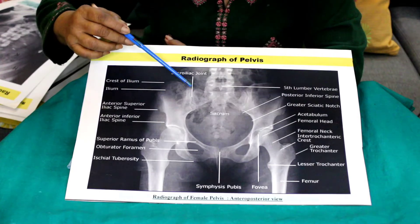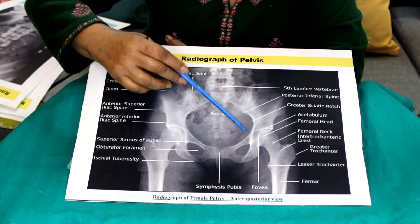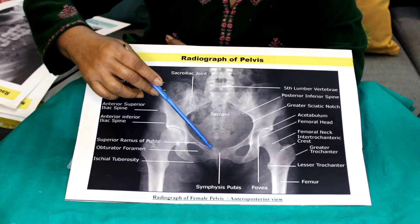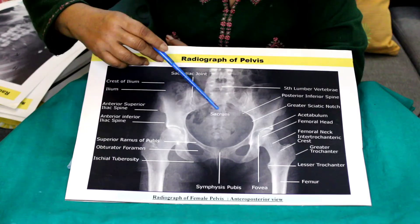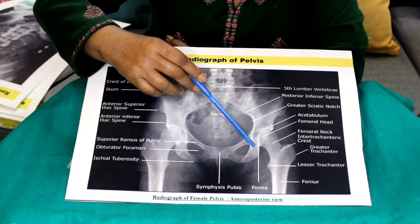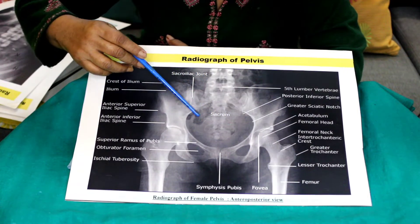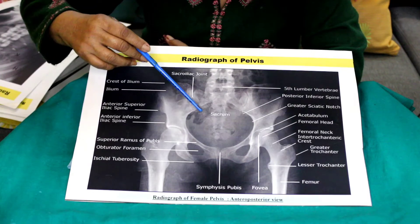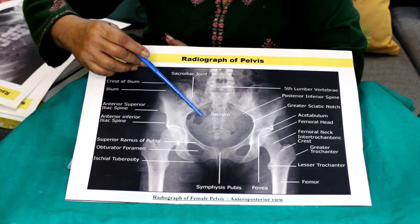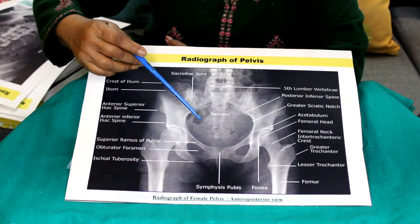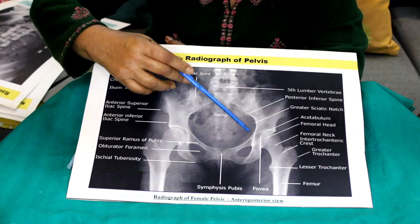Now you will see here the hip bone — there is the medial arcuate line of the hip bone, the superior border of the pubis, and the superior ramus of the pubis. This is the obturator foramen, and this is the ischial tuberosity. You will notice the black color here is the shadow of gas. When an X-ray of the abdomen is done, you have to remove the gas by giving a laxative the previous day, and after 12 hours of fasting you will do the X-ray.